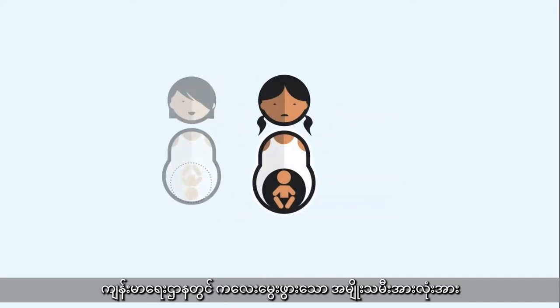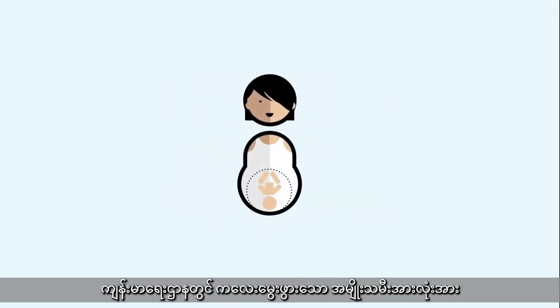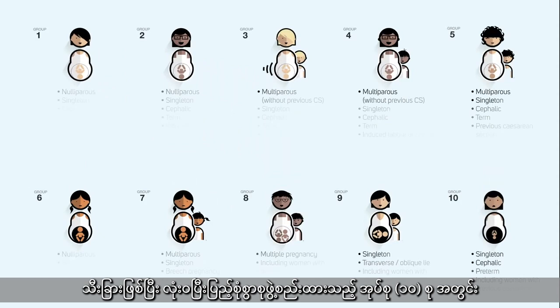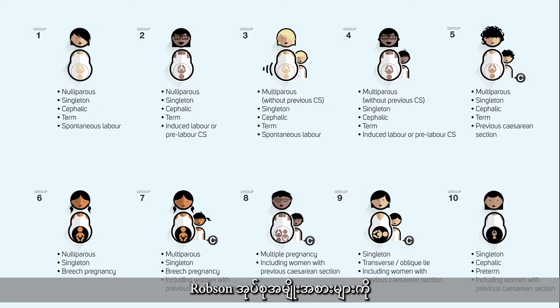The Robson system classifies all women delivering in a facility into one of ten categories that are mutually exclusive and, as a set, totally comprehensive. The categories are based on just a few basic prospective obstetric characteristics that are routinely collected in all maternities.